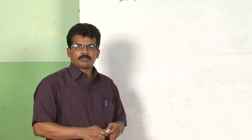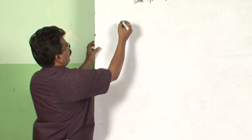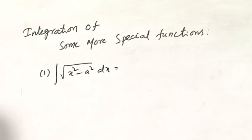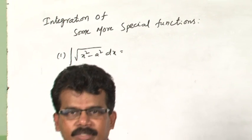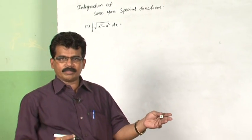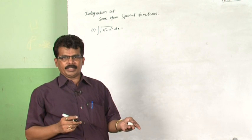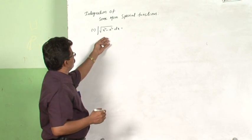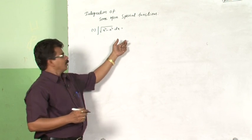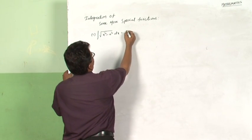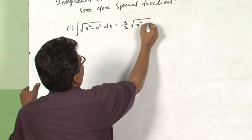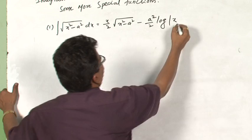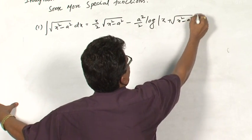Now we will see integrals of some more functions. Number 1: integral root of x square minus a square dx. Just be careful — earlier we have seen this type but here root of x square minus a square is in the numerator, not the denominator. This can be solved using x equal to a secant theta. The formula will be: x by 2 times root of x square minus a square, minus a square by 2 times log |x plus root of x square minus a square| plus c.